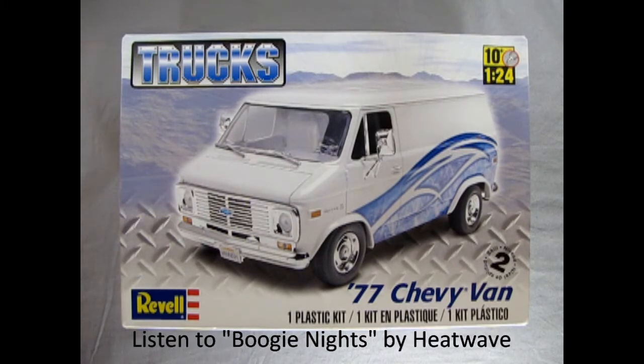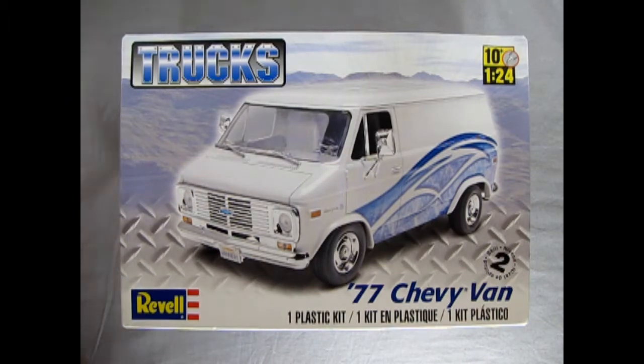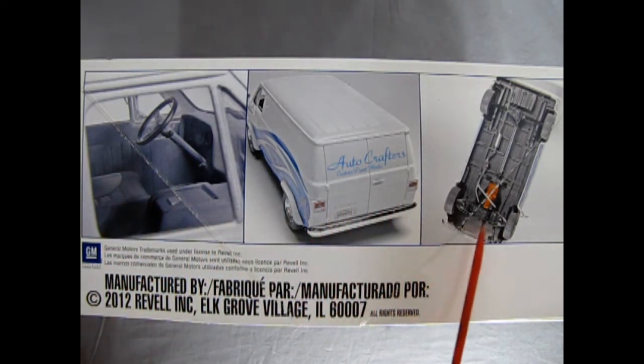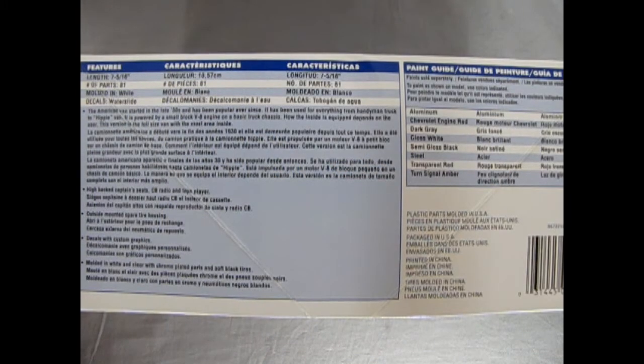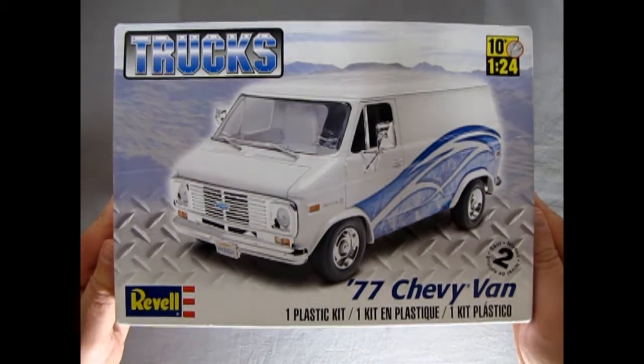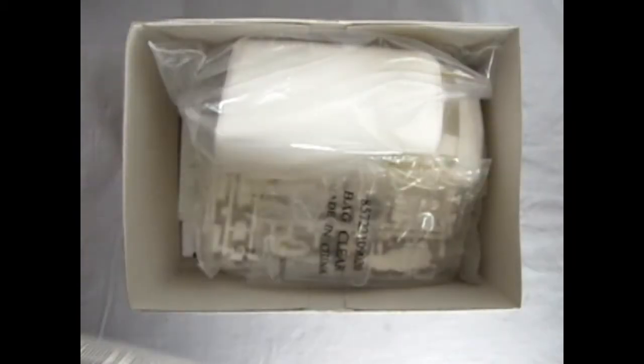So here we are with our 1977 Revel van and as you can see this is a great little 1/25th scale kit for ages 10 and up. On the side of this box we have a really groovy interior here as well as the Auto Crafters van and the undercarriage. And on the opposite side of the box we get all the details on this model kit as well as this great paint guide so we know what colors to use. Now let's take the lid off this great 1977 disco van and see what's inside the box.